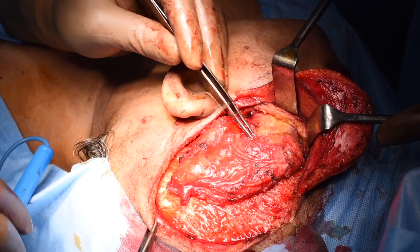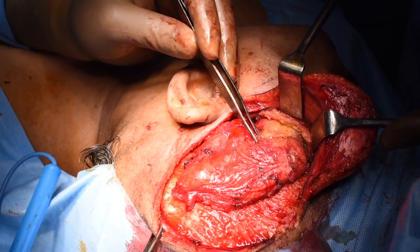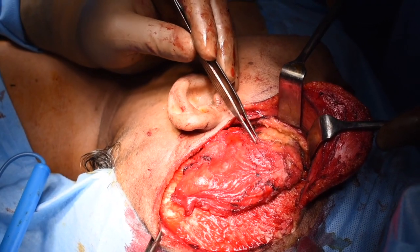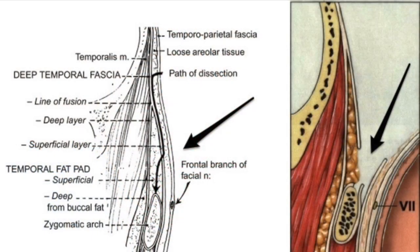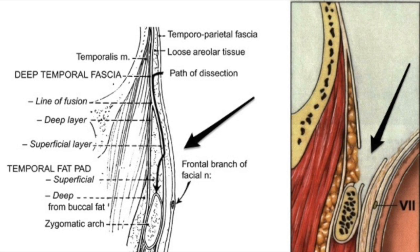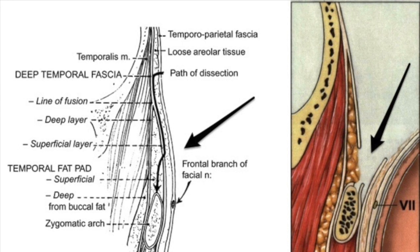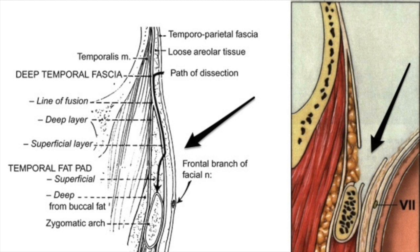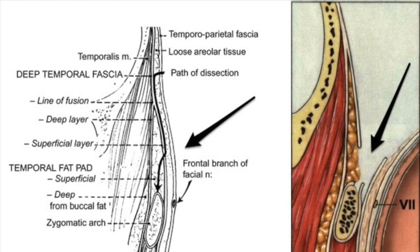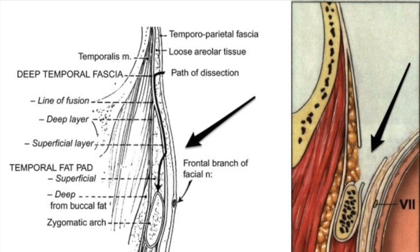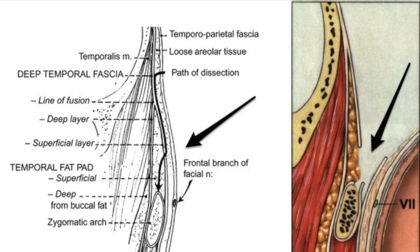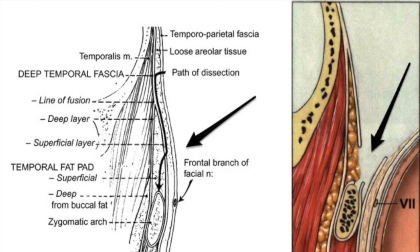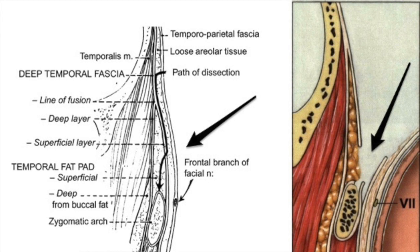Finally, the fascia is detached from the superior border of the zygomatic arch. Care should be taken to avoid injury to the frontal branch of the facial nerve. Just above the zygomatic arch, the temporalis fascia splits into two layers: a superficial layer that runs lateral to the arch and a deep layer that goes medial. The space between these two layers is occupied by the temporal fat pad. As we approach the zygomatic arch, the superficial layer of the temporalis fascia is dissected and further dissection is carried out medial to the arch, so that the frontal branch of the facial nerve can be preserved.